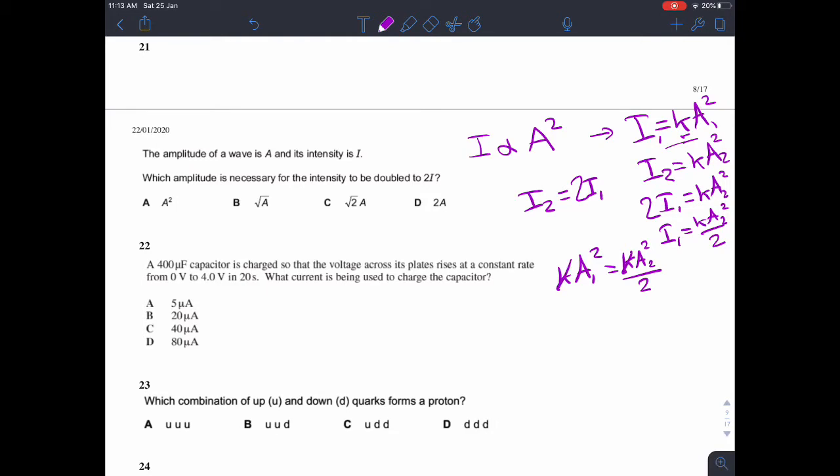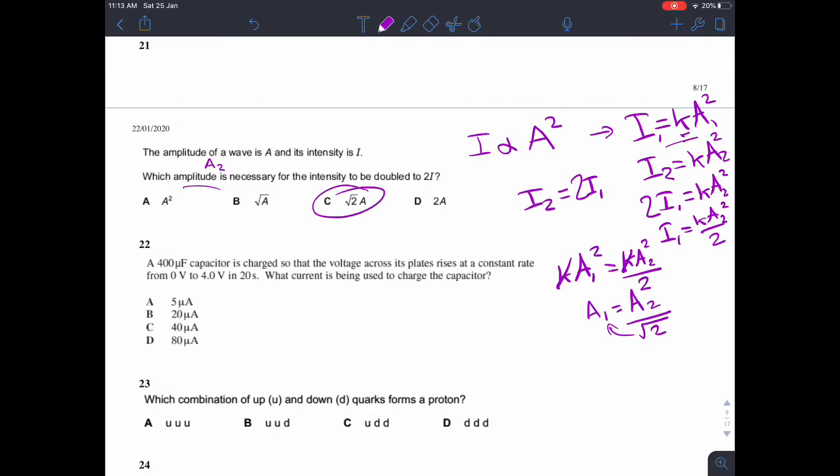Then we can equate that, so I1 equals KA1 squared, and I1 also equals KA2 squared over 2. So then we have KA1 squared equals KA2 squared over 2, and so then we can cancel through by K. We can say that if we square root everything, then we get A1 equals A2 divided by root 2. And the question is, which amplitude is necessary? So what is A2? A2 is root 2 times A1, so root 2 times A is root 2A, which is C.